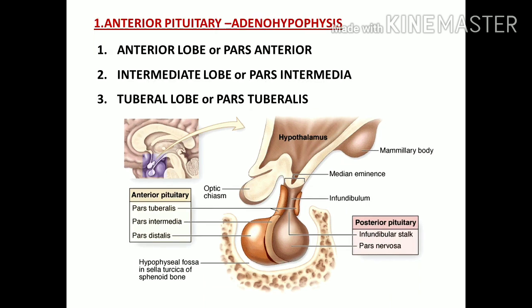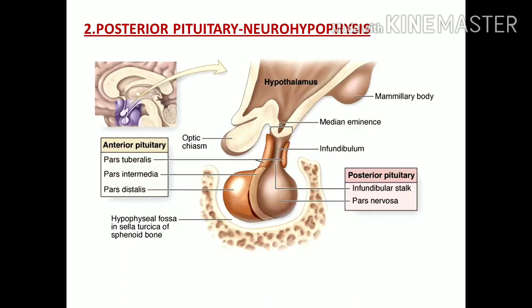The anterior pituitary consists of three parts: the anterior lobe, the intermediate lobe, and the tuberal lobe. In between the anterior lobe and the intermediate lobe there is a cleft called the intraglandular cleft.